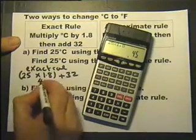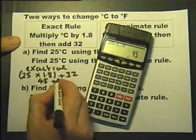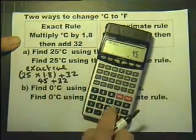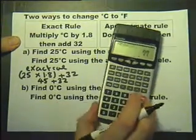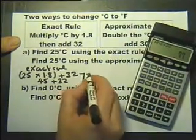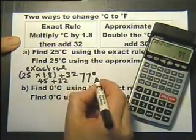That comes to 45. Now we add on the 32, and we'll use the calculator all the way for that one. We get the answer of 77 degrees Fahrenheit.